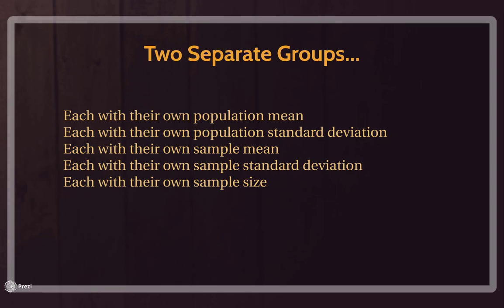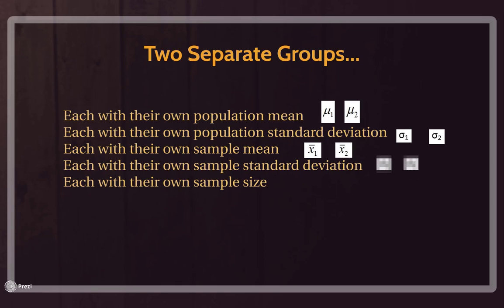Something to consider when thinking about independent two-group data is that because they are two separate groups, each of them will have their own measurements. Each will have their own population mean, denoted with mu — so mu sub one and mu sub two. Each will have their own population standard deviation: sigma sub one and sigma sub two. Each will have their own sample mean: X-bar sub one and X-bar sub two. Each will have their own sample standard deviation: S sub one and S sub two. And finally, each will have their own sample size: N sub one and N sub two.